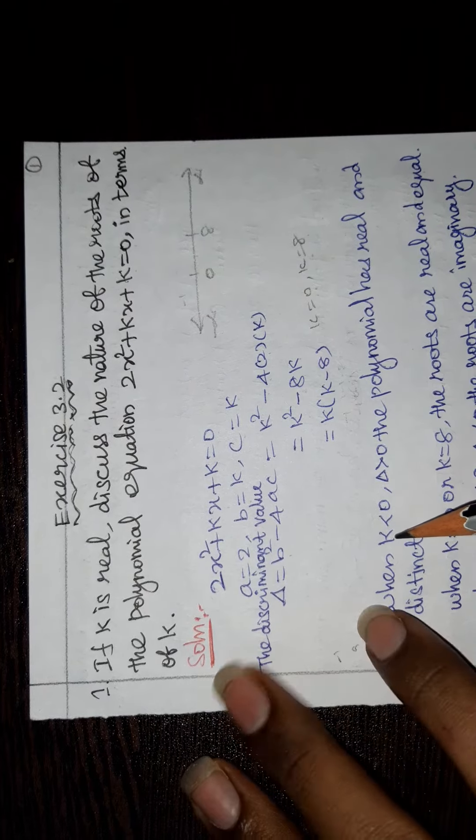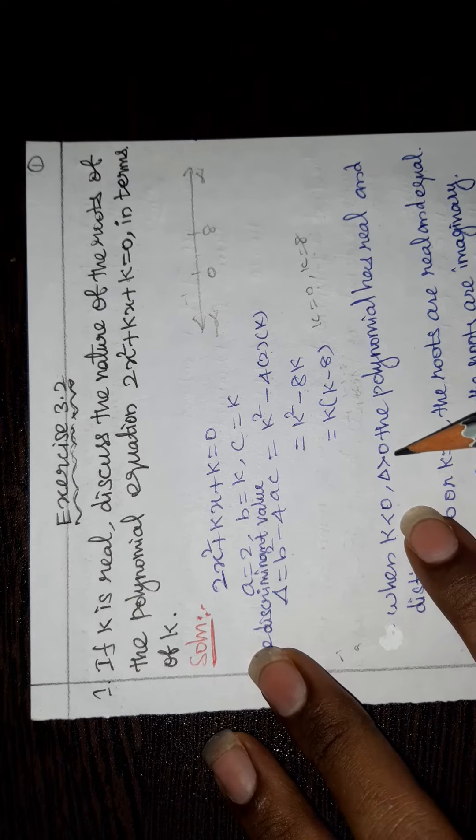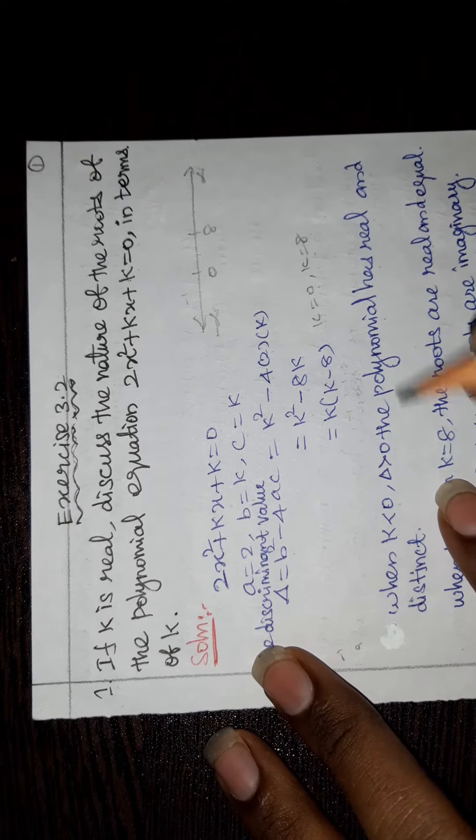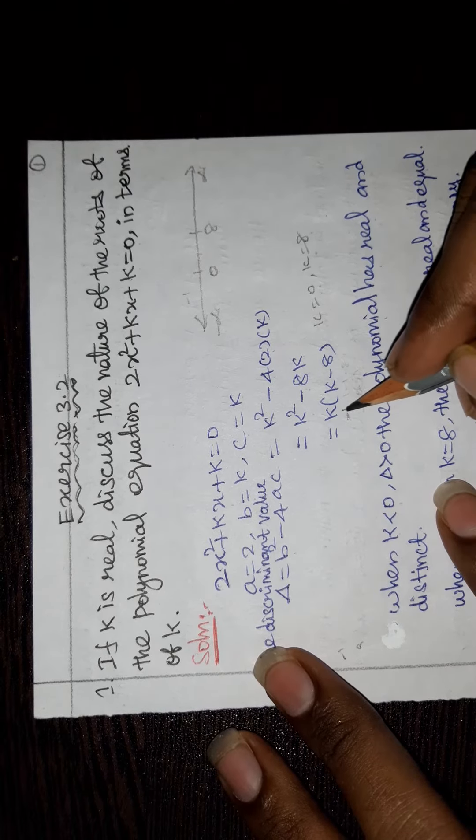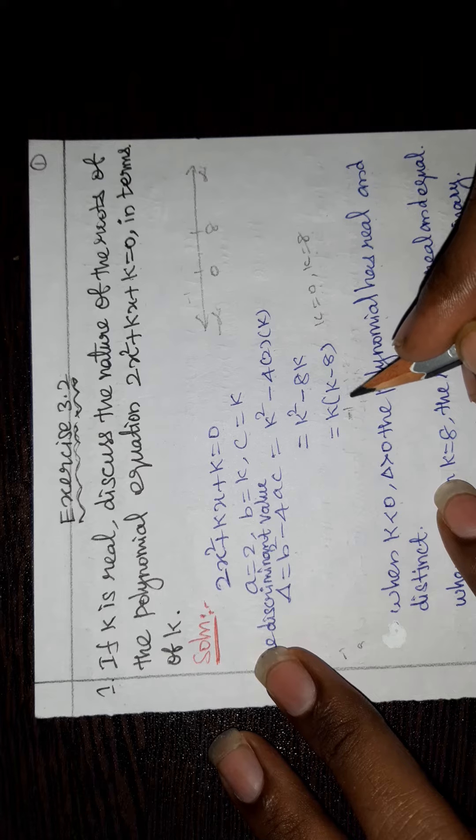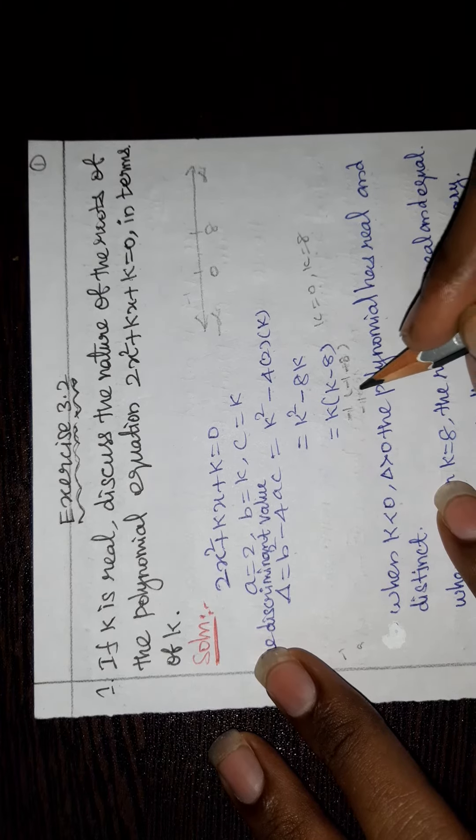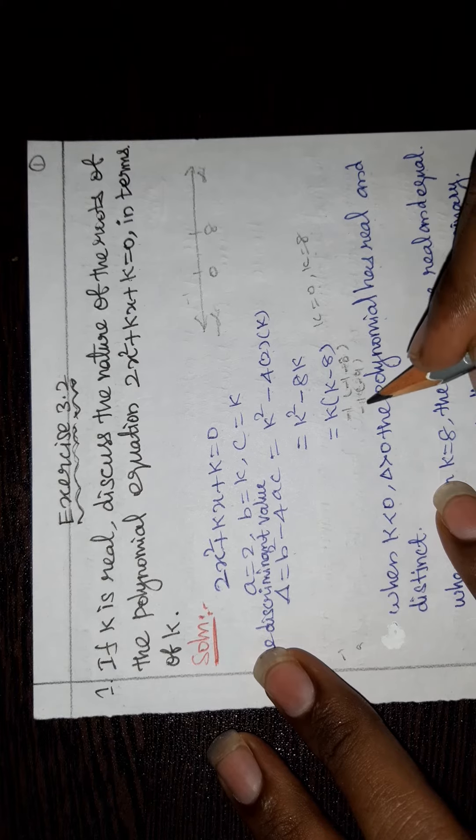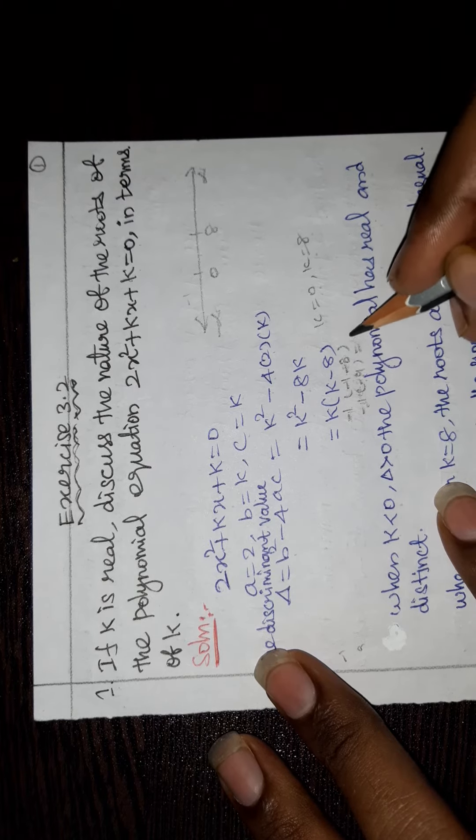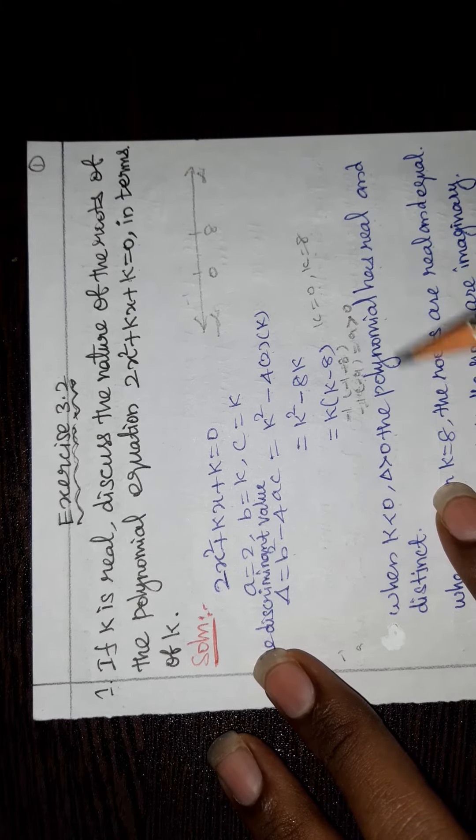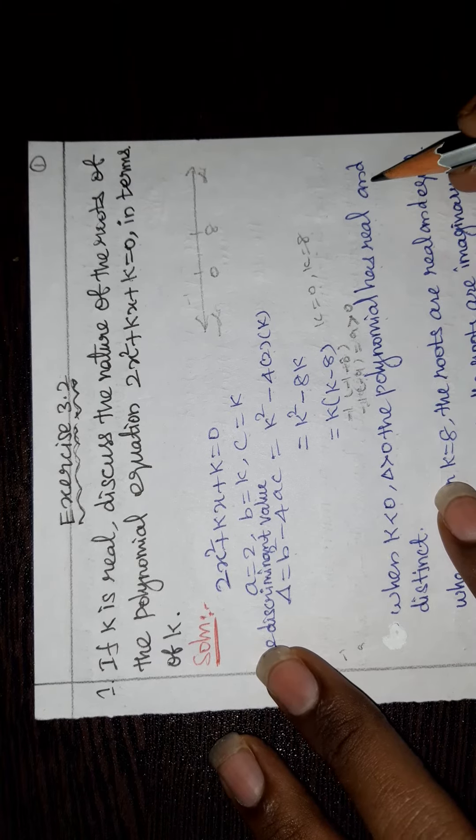When k is negative means Δ > 0, the polynomial has real and distinct roots. Suppose we take -1, k = -1 means (-1)(-1 - 8) = (-1)(-9) = 9 > 0. So Δ > 0, the polynomial has real and distinct roots.